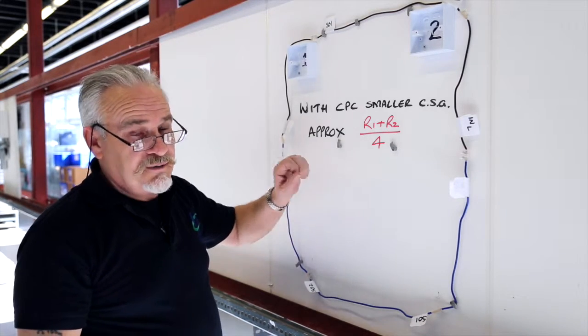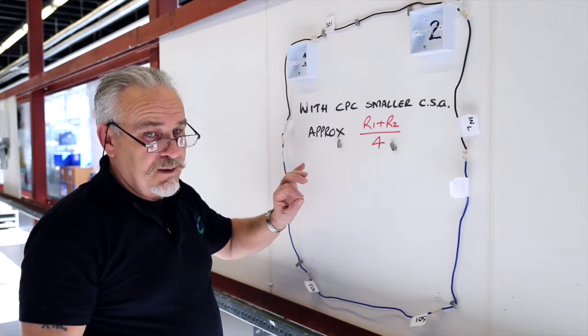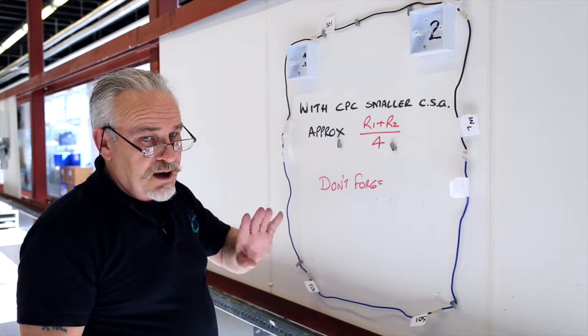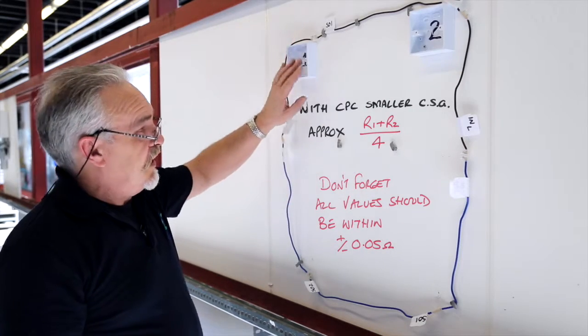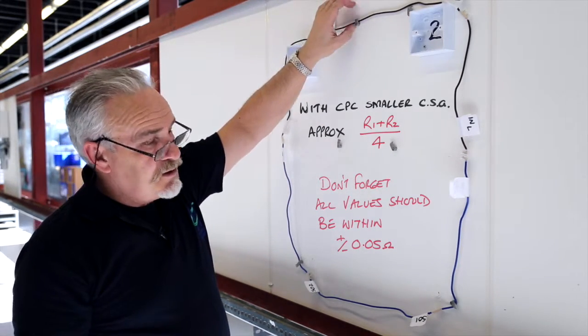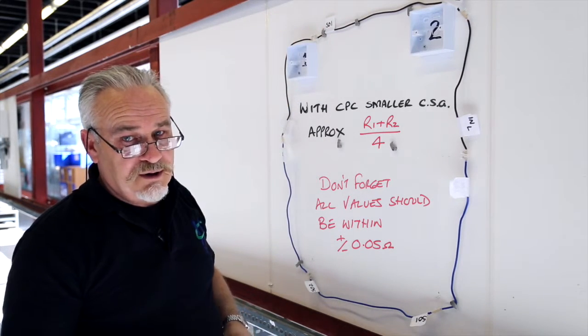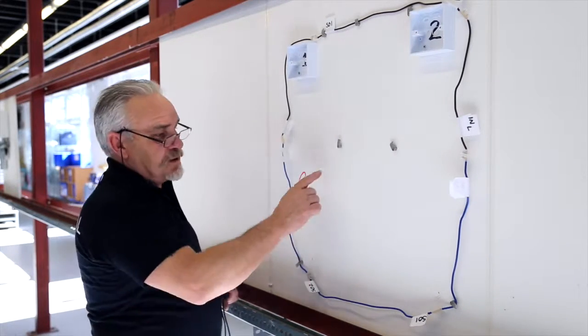Obviously when you're using twin and earth the circuit protective conductor, the CPC, is slightly smaller so you will get slightly distorted measurements. However they should all be about the same and what you'll find is that at your furthest socket you get your maximum resistance.